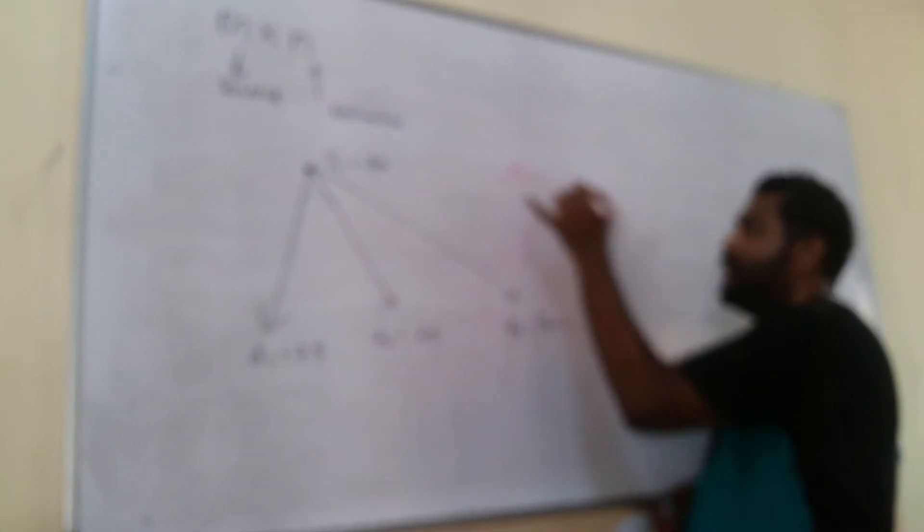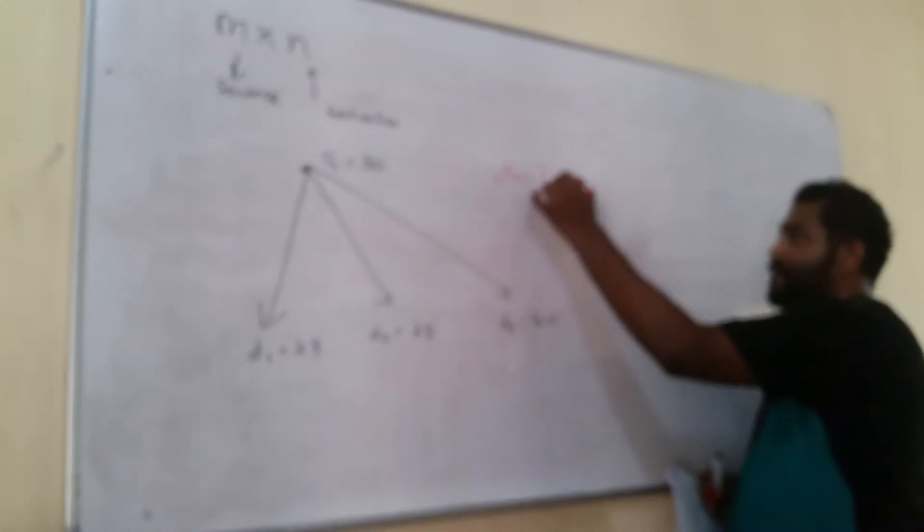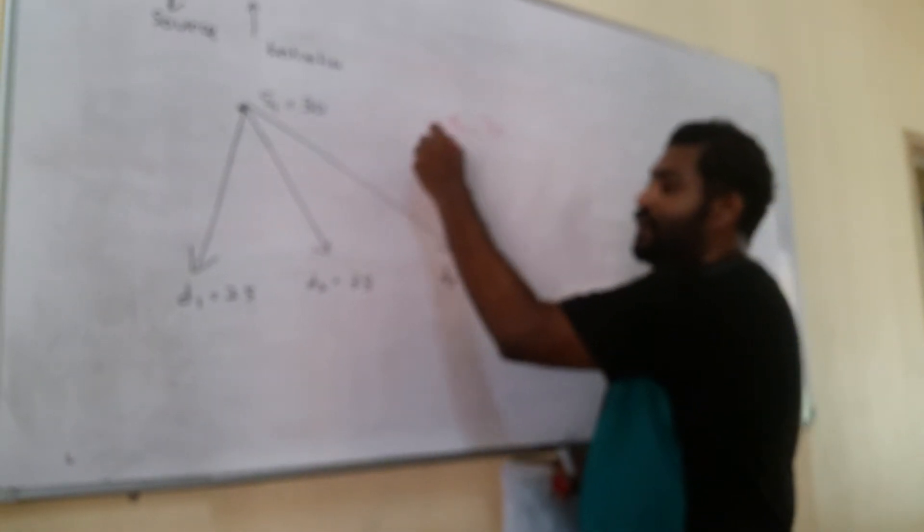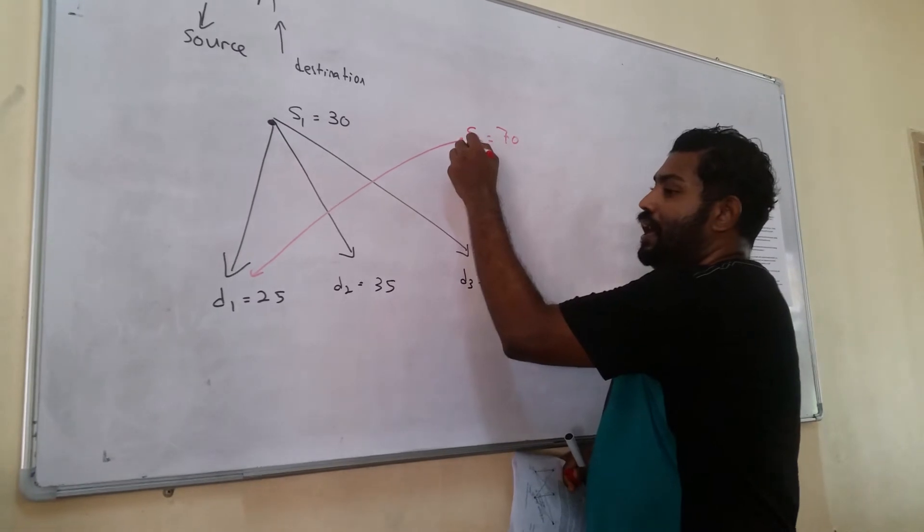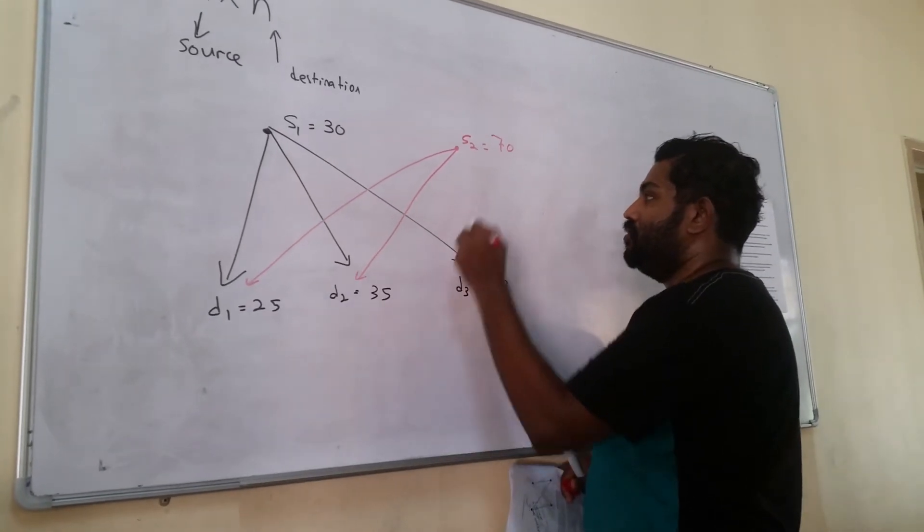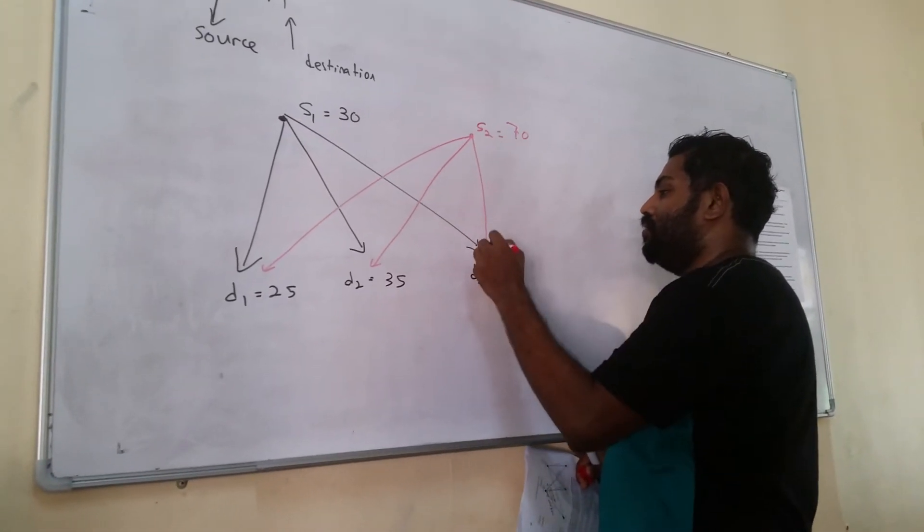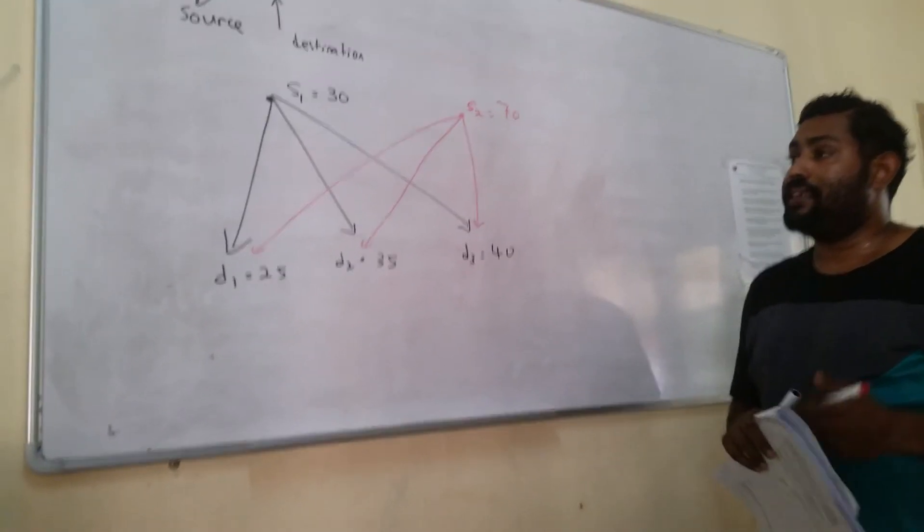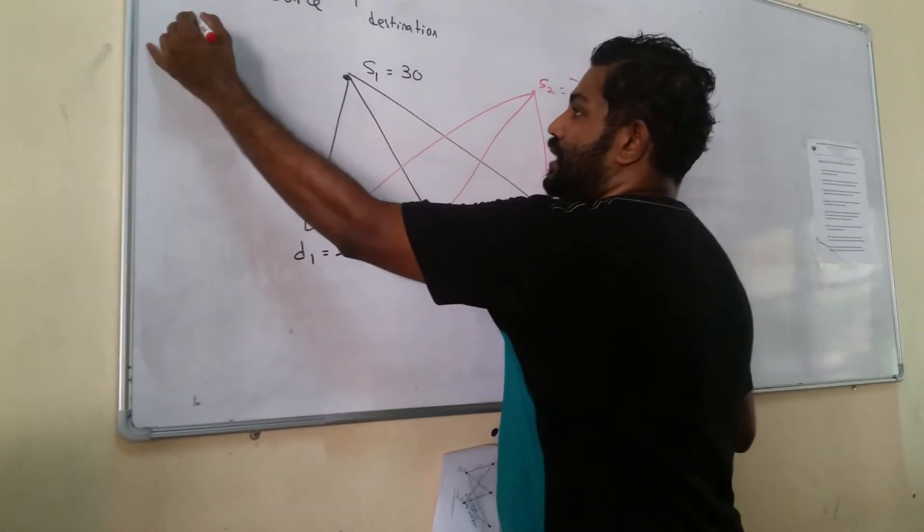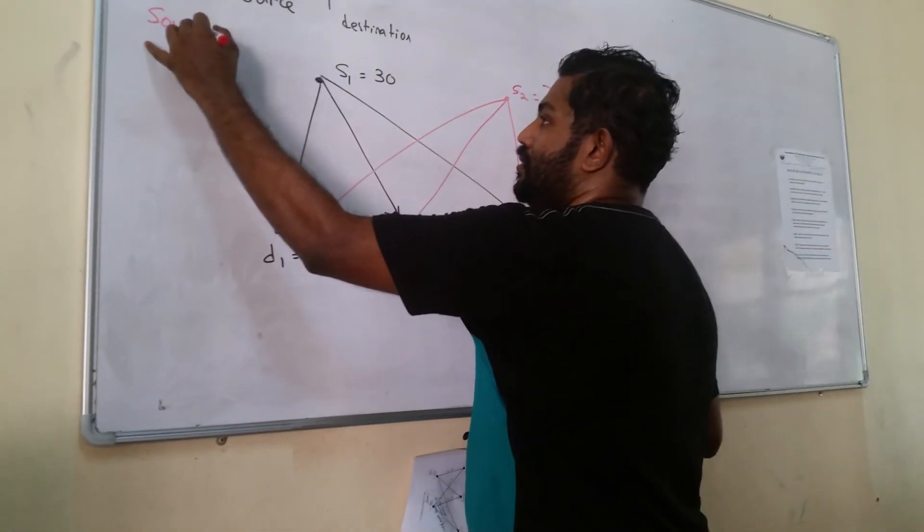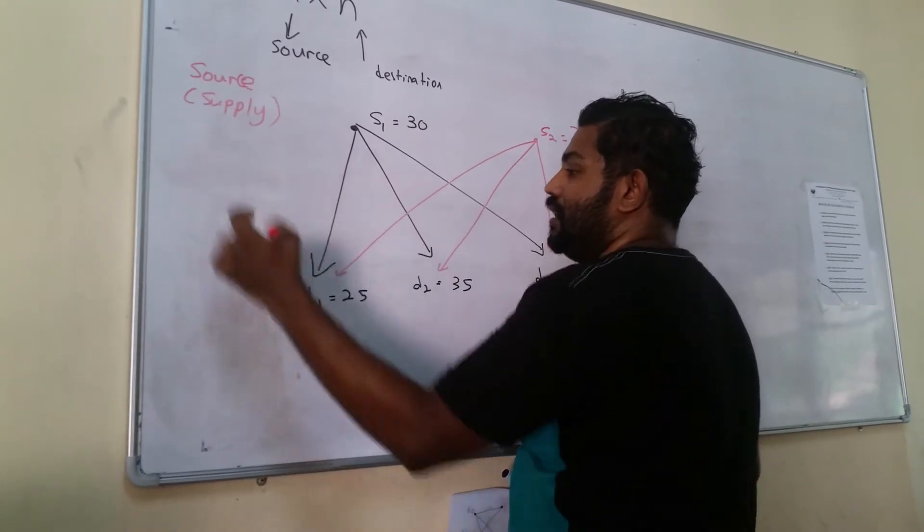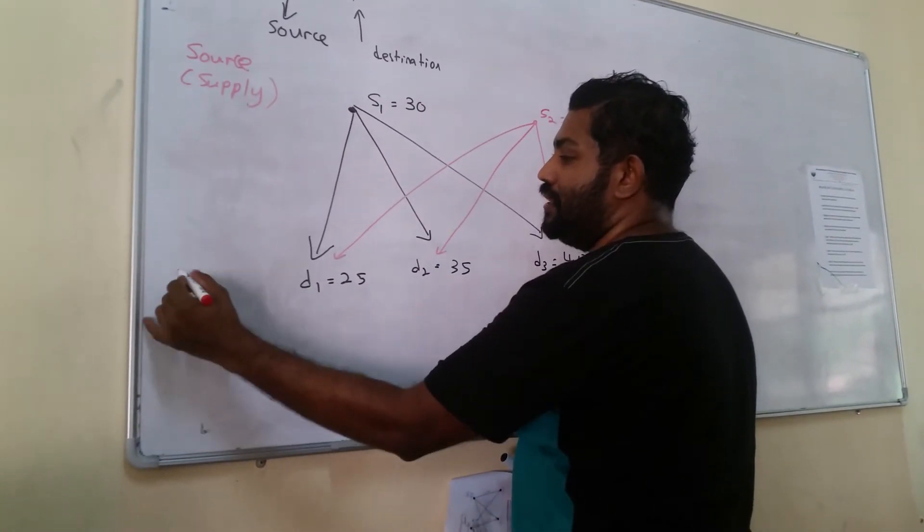Let's say now we have S2 which also has 70 level of inventory, where they also can shift to D1, D2, and also D3. This is an example of supply where m here is the source or the supply, and this is called the destination.